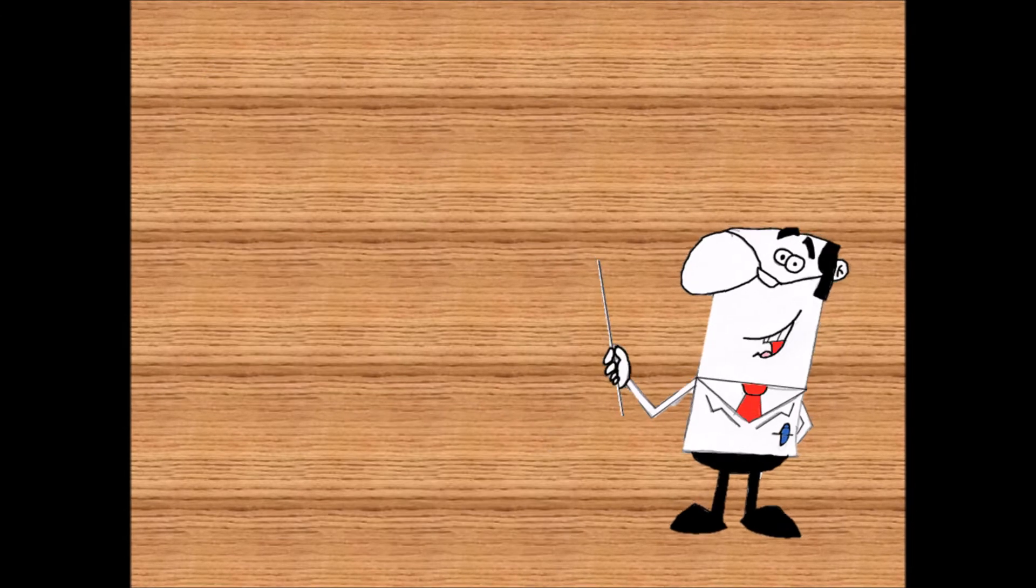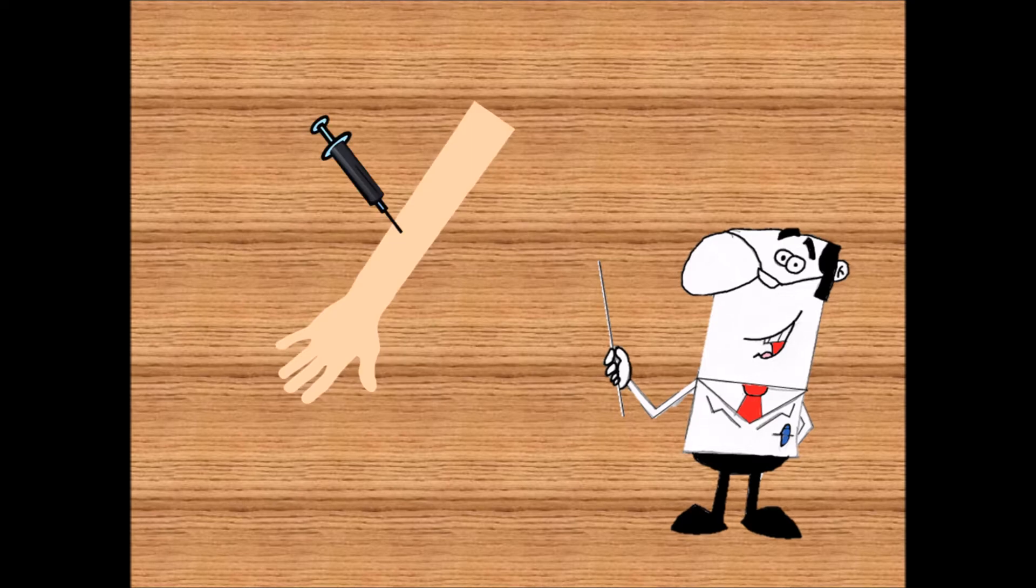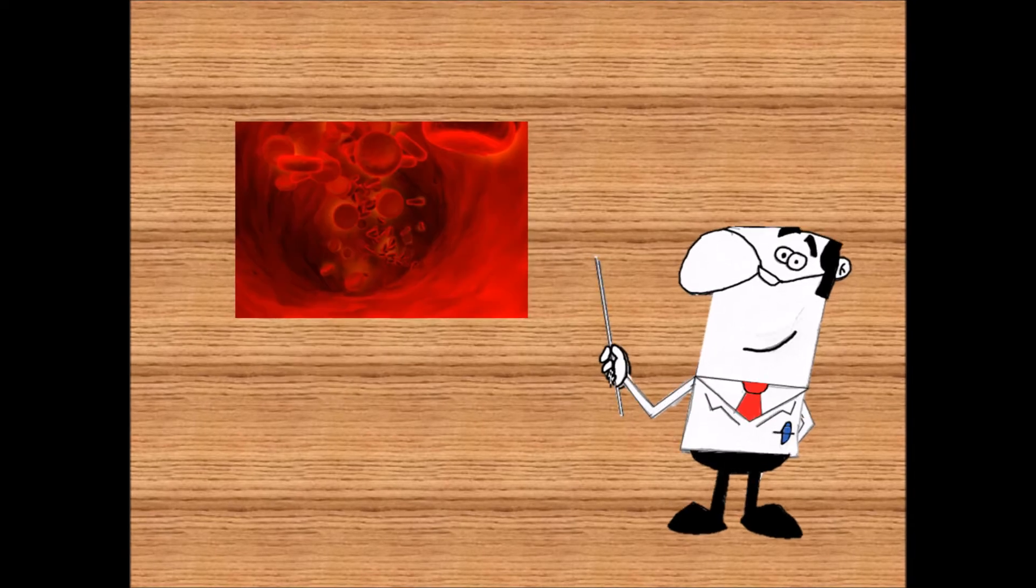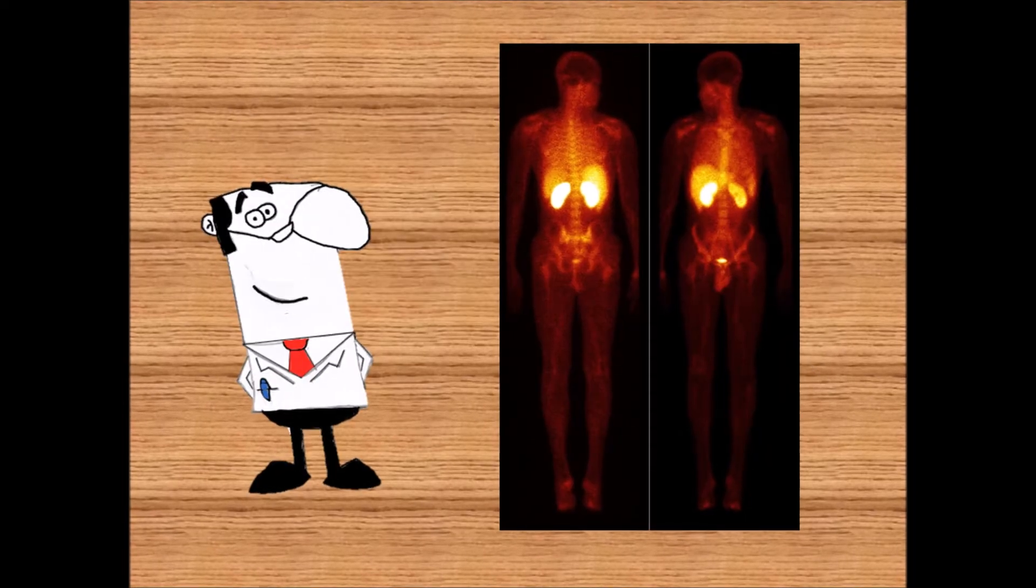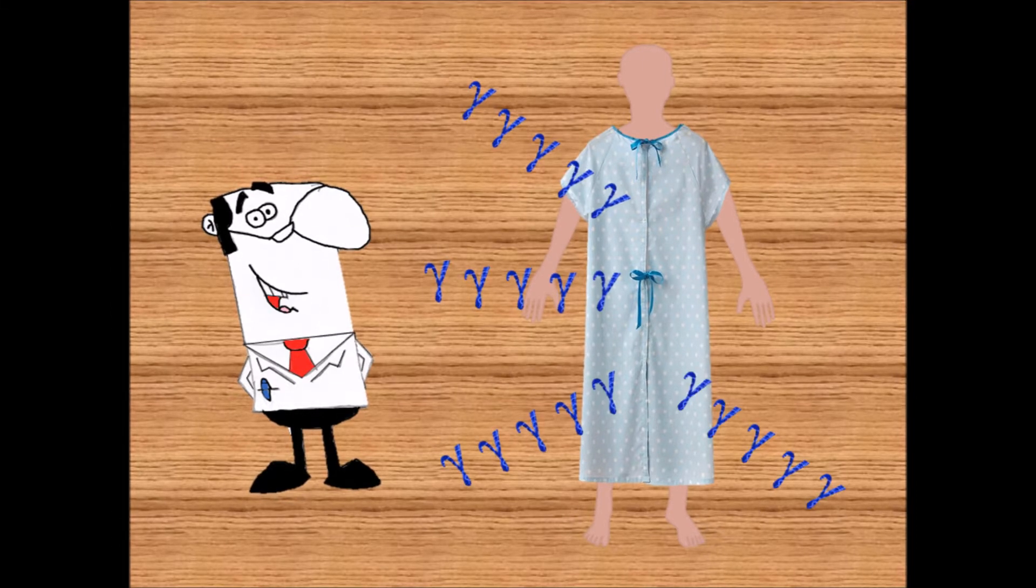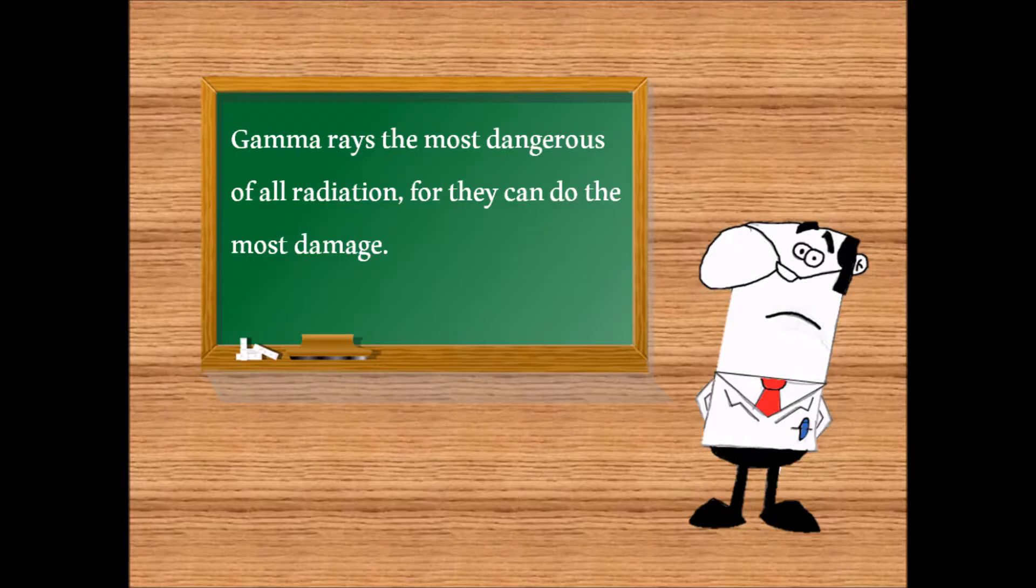The Technetium is then injected into the body through a protective syringe and into the bloodstream. These images are detected from the gamma rays that are emitted from the body of the patient. The gamma rays are the most dangerous of all radiation, for they send out radioactive waves that can cause cancer.